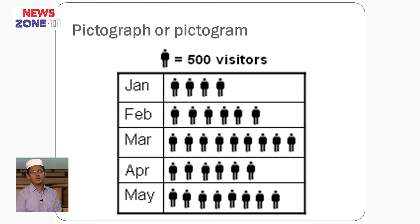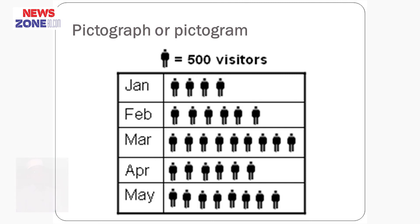This is a pictogram or picture diagram. This type of diagram is made to understand information at a glance. Here we see January has 4 person-pictures, where one person represents 500 visitors. So in a hospital, January shows 4 pictures, meaning 2000 persons visited the hospital in the month of January. This type of graph is known as a pictograph.